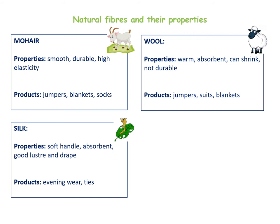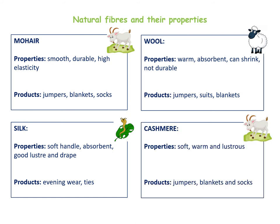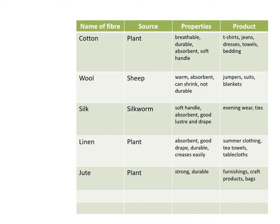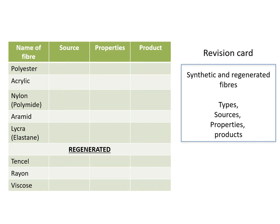Silk is very soft to handle, absorbent, has a good lustre — that means a shine on the top of the fabric — and a good drape as well. The negatives are that it is a delicate fabric, but this makes it really good for products like evening wear and ties. Cashmere is similar to wool and mohair; the properties are that it is soft and warm, and products are very similar — jumpers, blankets and socks. Here are the answers if you want to create a revision flashcard.